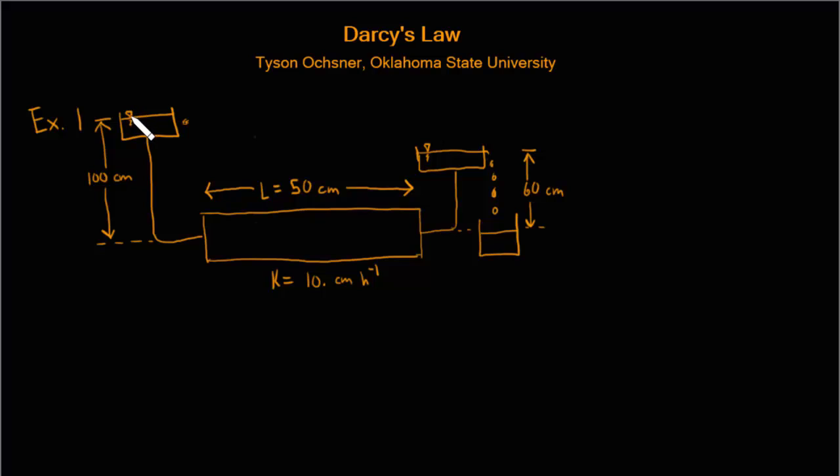So this upside-down triangle here on the left-hand side indicates that the water level there is at atmospheric pressure. That reservoir is connected to the soil column and the water flows through the soil column and then on the right-hand side the column is connected to another reservoir of water also at atmospheric pressure and the free water surface there is 60 centimeters above the center line of the column.